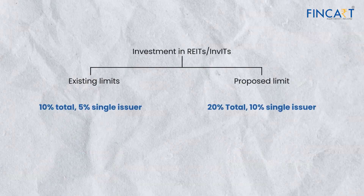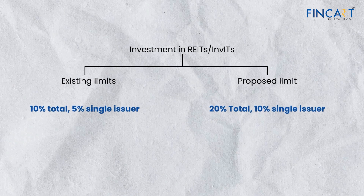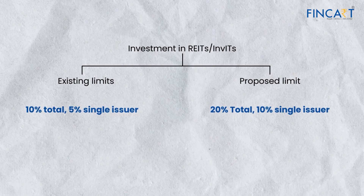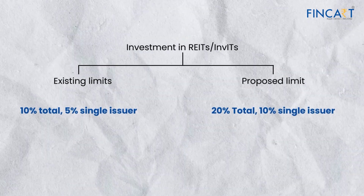For credit risk exposure, mutual funds are capped at 10% whereas in the new asset class it is increased to 15%. For REITs (Real Estate Investment Trusts) and InvITs (Infrastructure Investment Trusts), the single issuer limit in mutual funds is 10%, whereas in the new asset class this is increased to 20%.